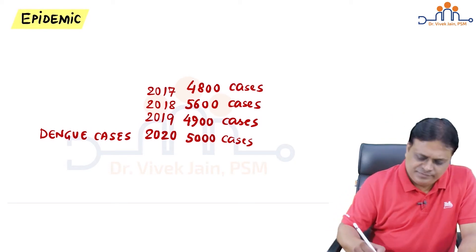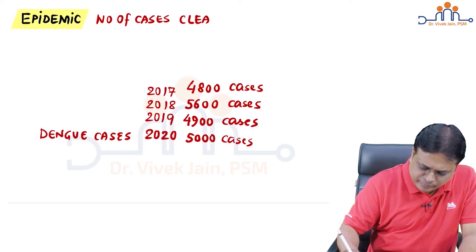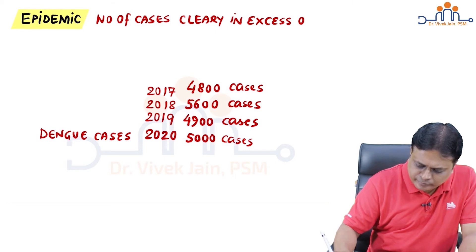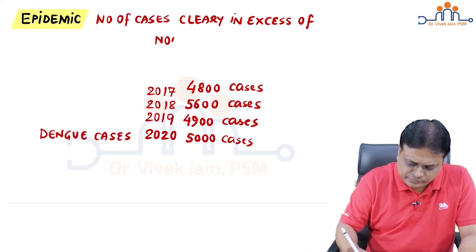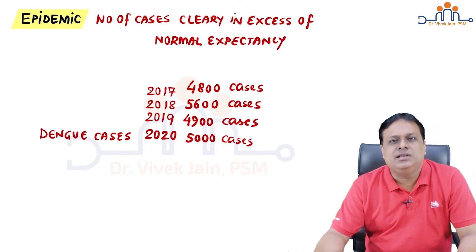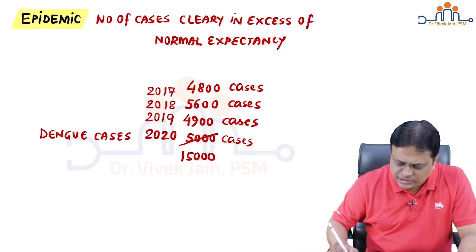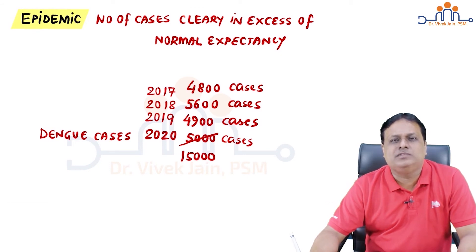The technical definition of epidemic is: the number of cases of a disease clearly in excess of normal expectancy. In our example, normal expectancy was around 5000 cases every year. If in 2020 there are 5000 cases, that is normal expectancy — not an epidemic. But if this year the number is not 5000 but 15000, that is a clear excess and will be labeled as an epidemic. We cannot define epidemic just by a single number; we need to know the normal expectancy.